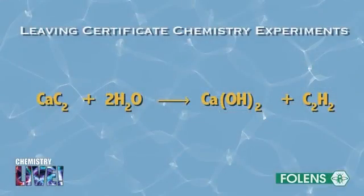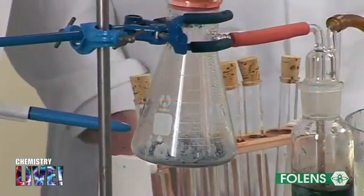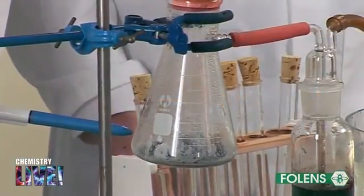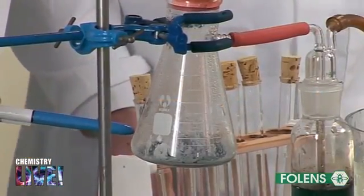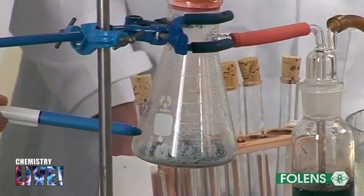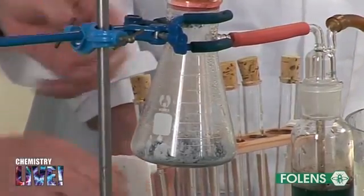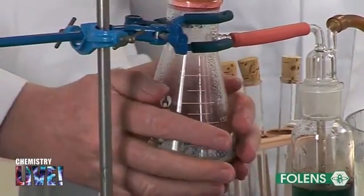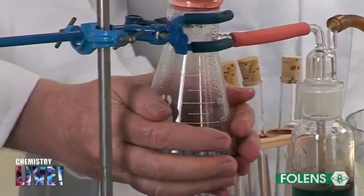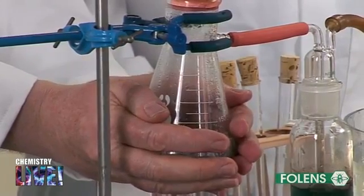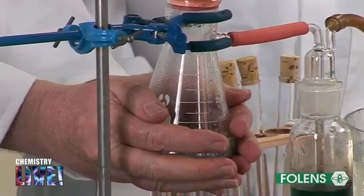The equation for the reaction is shown on the screen. Note the formation of white calcium hydroxide inside the flask. Place your hand on the outside of the flask. When you perform this experiment yourself, write down what you notice.